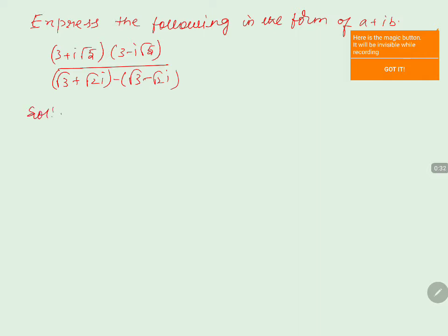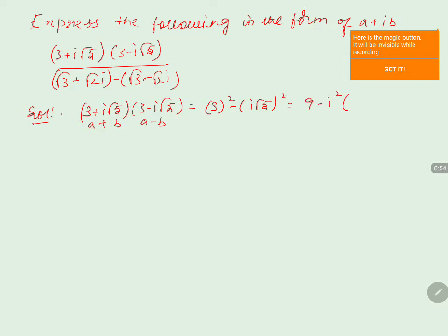We will see the numerator first: 3 plus i root 5 into 3 minus i root 5. The numerator is in the form of a plus b into a minus b, so we write it as a squared minus b squared. That gives us 3 squared minus i squared into root 5 whole squared, which is 9 minus i squared times 5. Since i squared is minus 1, it becomes 9 plus 5, giving us 14.